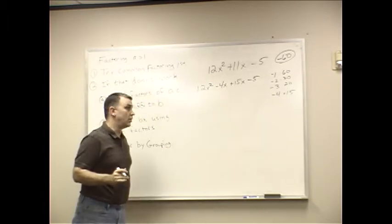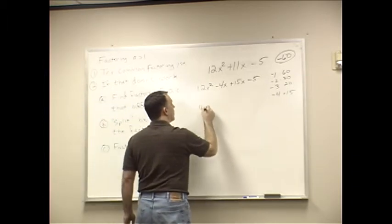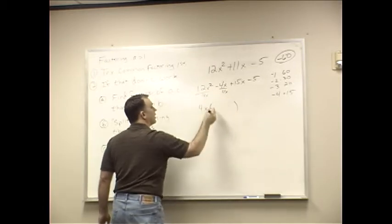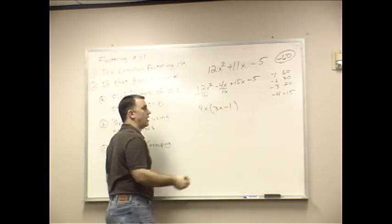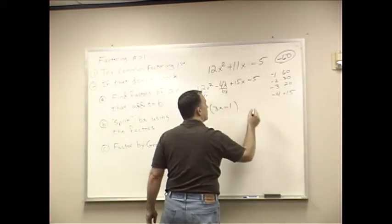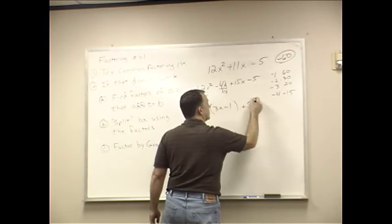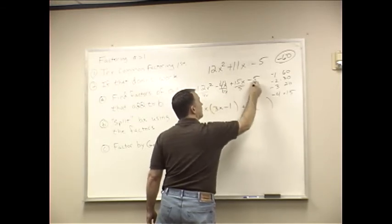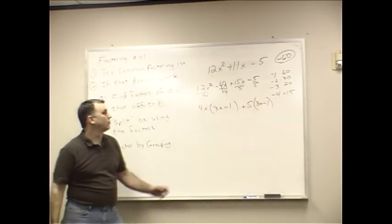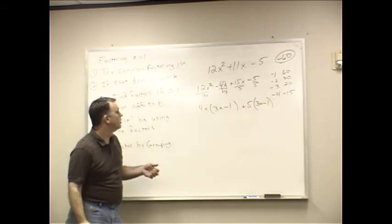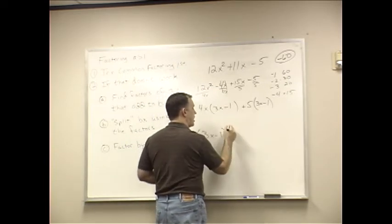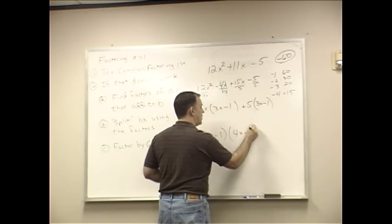Factor by grouping. Look at the first two. They both have a 4X in common. And divide by 4X, divide by 4X, that would be 3X minus 1. Hey, remember, if the whole thing is there and everything cancels, it's a 1. 15X minus 5, they have a 5 in common. Divide by 5, divide by 5, gives me 3X minus 1. And, yeah, these problems are contrived. You'll notice it always seems to work. So, now we have 3X minus 1 and 4X plus 5.